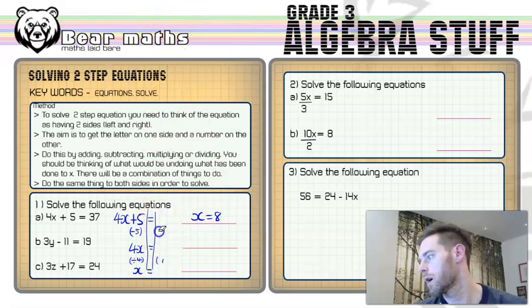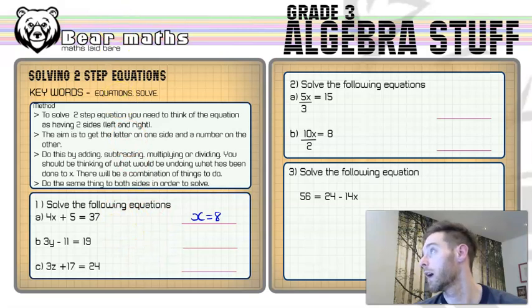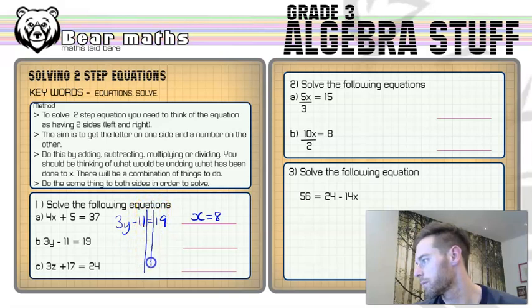I'm going to get to see the magic that goes on in question B. 3y minus 11 equals 19. Two sides to an equation, a left side and a right side. Now I want to get rid of that minus 11 and to get rid of a minus 11 I have to add 11. It's much the same as the last question, thinking of the inverse operation, add 11 to both sides, to the number bits.